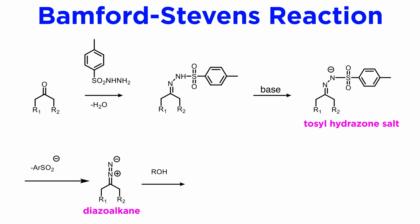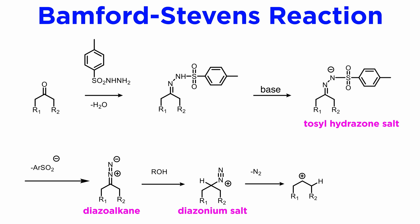In a protic solvent, the diazo compound can be protonated to form a diazonium salt, another unstable species, which solvolyzes by expelling the stable nitrogen molecule and forming a carbenium ion, which also undergoes a 1,2-hydride shift to give an alkene, again as a mixture of isomers. Therefore, the reaction works in both protic and aprotic solvents, though via two different mechanisms.